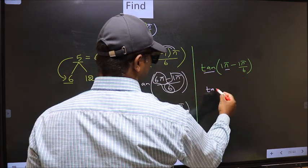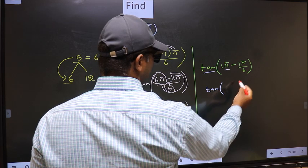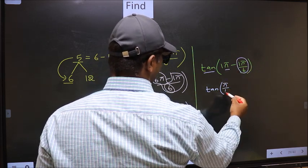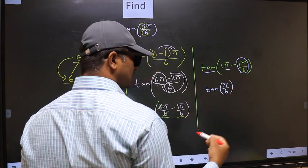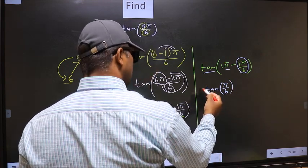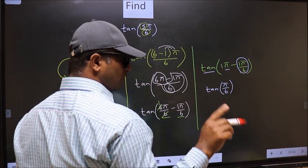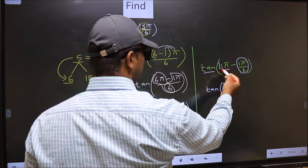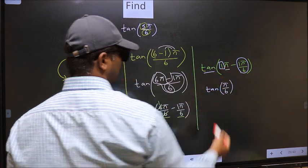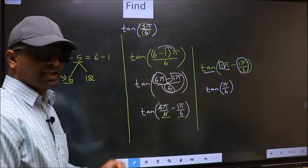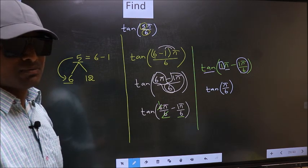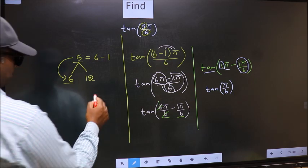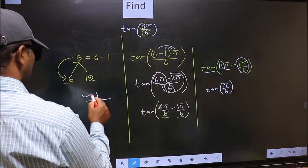Now the question is, will we get here plus or minus? To answer that, you should look at the number before π, which is 1. And 1 is odd, and all the odd multiples of π lie in either the second or the third quadrant.